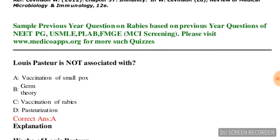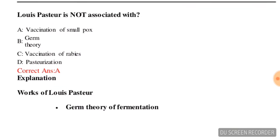Next question: Louis Pasteur is NOT associated with which of the following? Options are: vaccination of smallpox, germ theory, vaccination of rabies, pasteurization. The correct answer is vaccination of smallpox — Louis Pasteur is not associated with vaccination of smallpox.